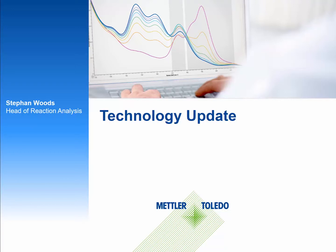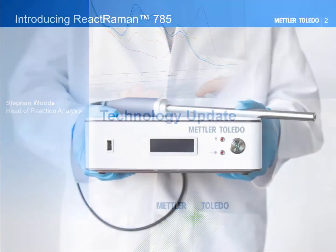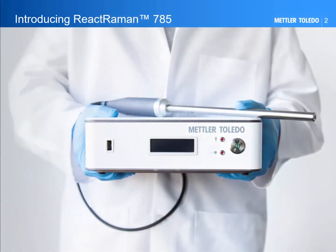Today I'm going to introduce to you the all-new ReactRaman 785 from Mettler Toledo. Raman is a complementary technique to FTIR, but allows the user to look at things from a different perspective. Raman has the ability to look at vibrational information that may be difficult to see with FTIR. It is often stated that FTIR is very good at obtaining molecular group information and Raman good at looking at backbone information.